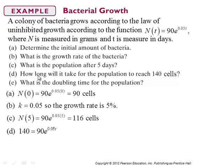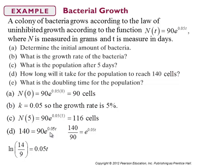Part D: how long will it take for the population to reach 140 cells? Set N(t) = 140, then do a little algebra to solve for t. Divide both sides by 90, take the natural log of both sides, divide both sides by 0.05. That works out to be approximately 8.8 days.